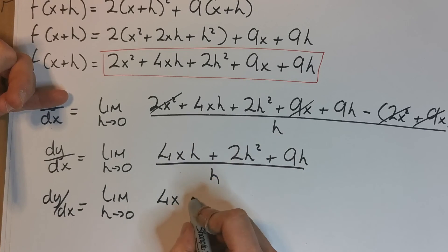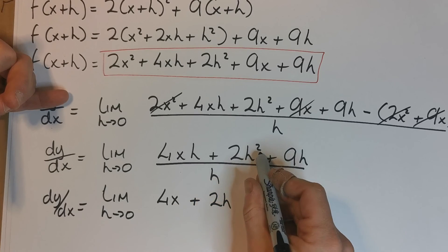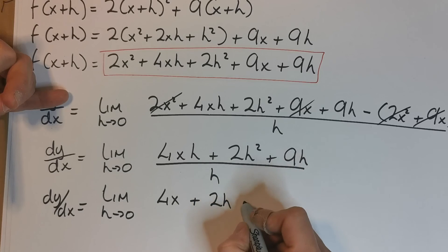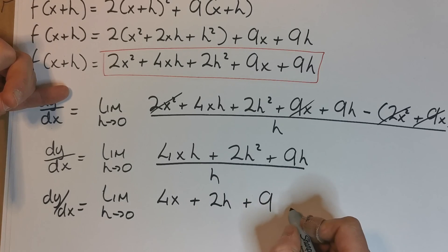h into this thing here—I should have said h into 4xh, sorry—h into this leaves me with 2h because h cancels one of those h's, and h into 9h leaves me with a 9.